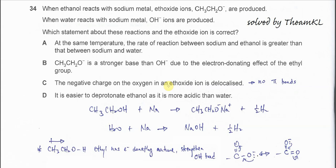Question 34. When ethanol reacts with sodium metal, ethoxides are produced. When water reacts with sodium metal, hydroxides are produced. Which statement about these reactions and the ethoxide ion is correct?